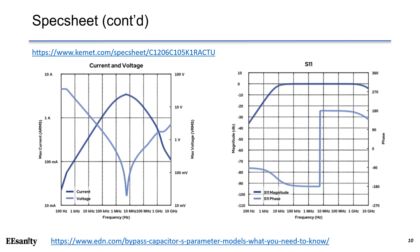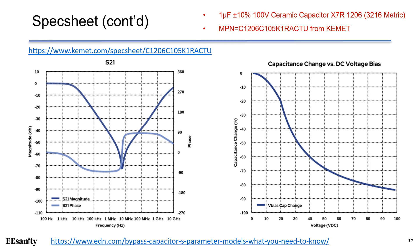On the right hand side, this is the S11 parameter. On the left, we can see the S21 parameter for this capacitor. On the right hand side, this is a very important curve for DC bias or DC voltage bias.